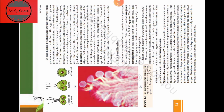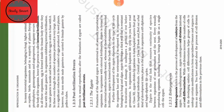In bony fishes and frogs, where a large number of offspring are produced, a major disadvantage is that offspring are extremely vulnerable to predators, and survival up to adulthood is uncertain. The number of offspring produced in external fertilization is more in number, while in internal fertilization it is less in number.